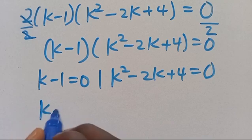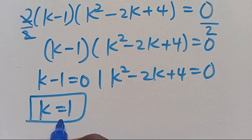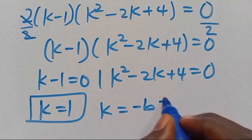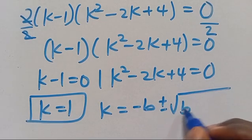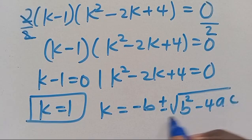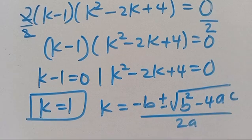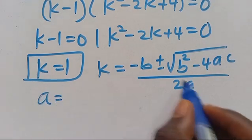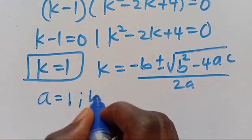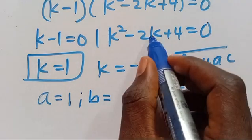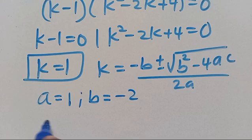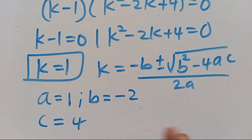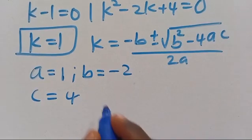For this expression to equal 0, we have K minus 1 equals 0, or K squared minus 2K plus 4 equals 0. From K minus 1 equals 0, we get K equals 1 as our real solution. For the quadratic, we apply the quadratic formula: K equals minus B plus or minus square root of B squared minus 4AC, all divided by 2A. Here parameter A is the coefficient of K squared, which is 1, parameter B is the coefficient of K, which is minus 2, and parameter C is 4.